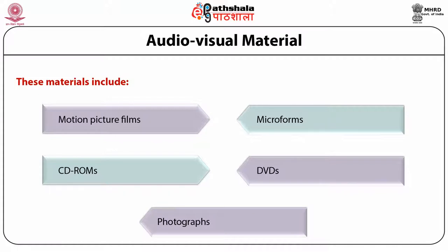Motion picture films. A film, also called a movie or motion picture, is a series of still or moving images. It is produced by recording photographic images with cameras or by creating images using animation techniques or visual effects. Micro forms. Micro forms — either films or papers — contain micro reproductions of documents for transmission, storage, reading, and printing. Micro form images are commonly reduced to about 1/25th of the original document size. With advancements in computer technology, especially digitization of materials, the process of producing and using micro forms has undergone tremendous changes. Presently, documents are scanned and stored electronically.